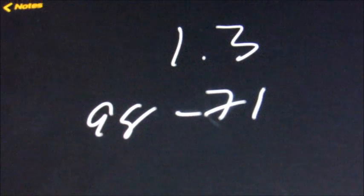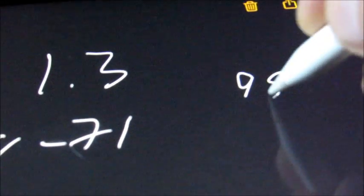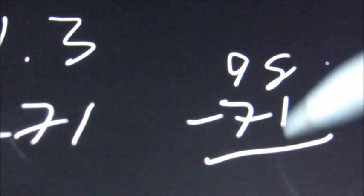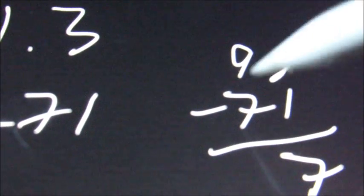So what we're going to do here, again, just like when we added, we're going to put them vertically. So 98 minus 71. And we're just going to subtract 8 minus 1 is 7, 9 minus 7 is 2.